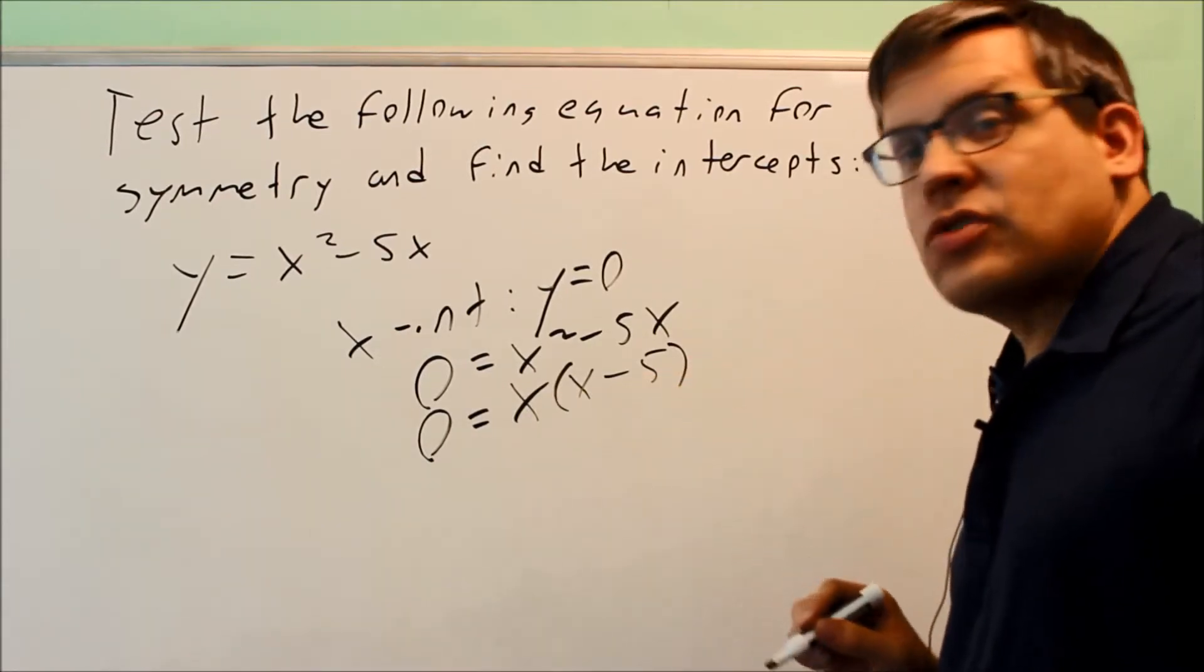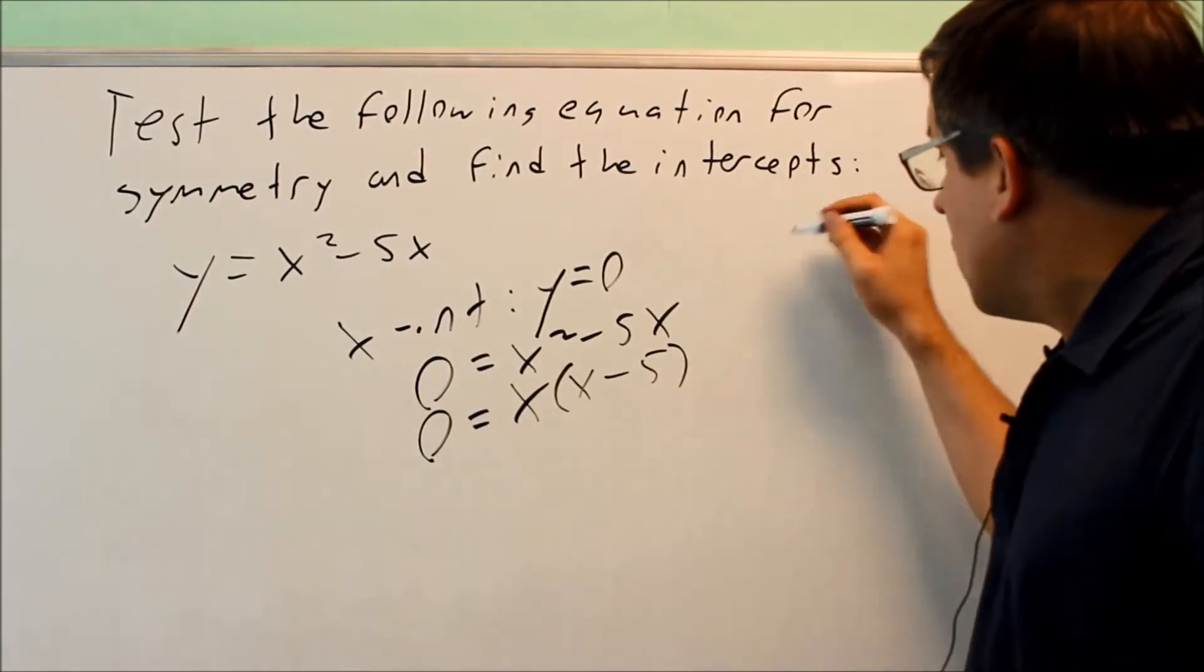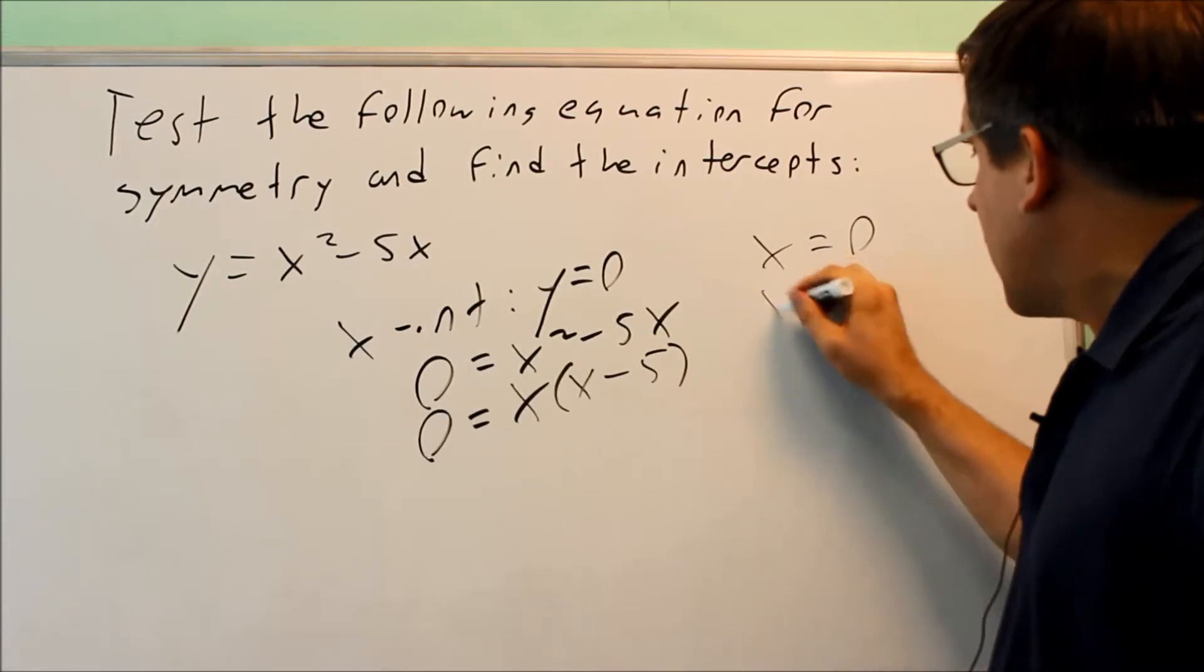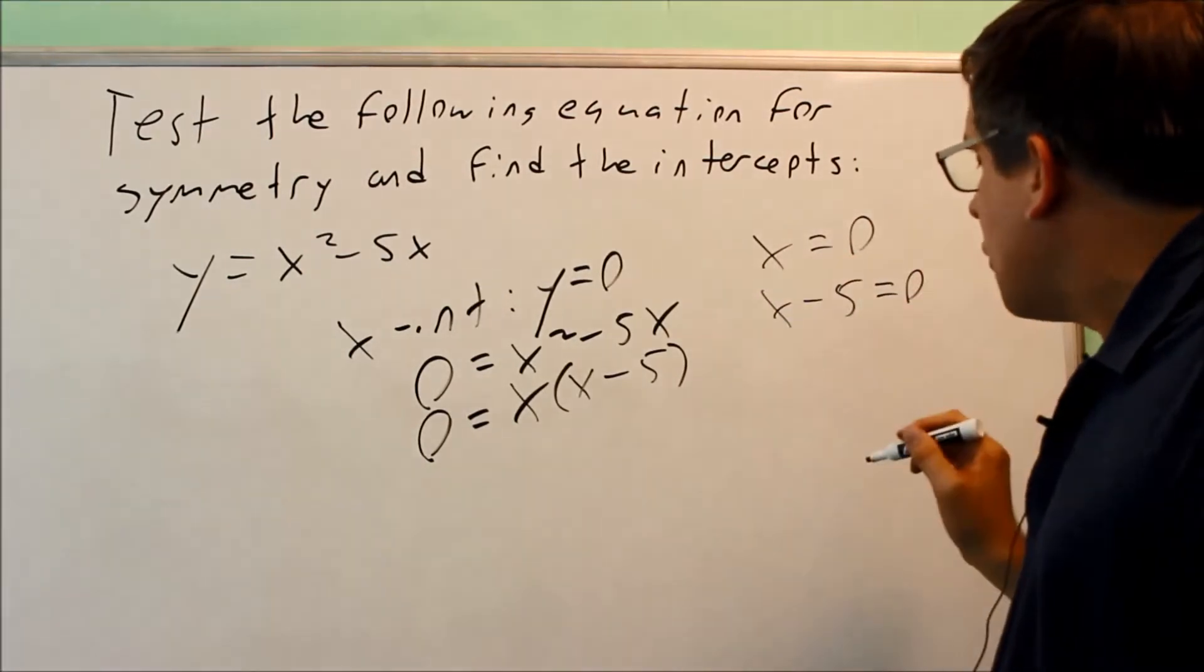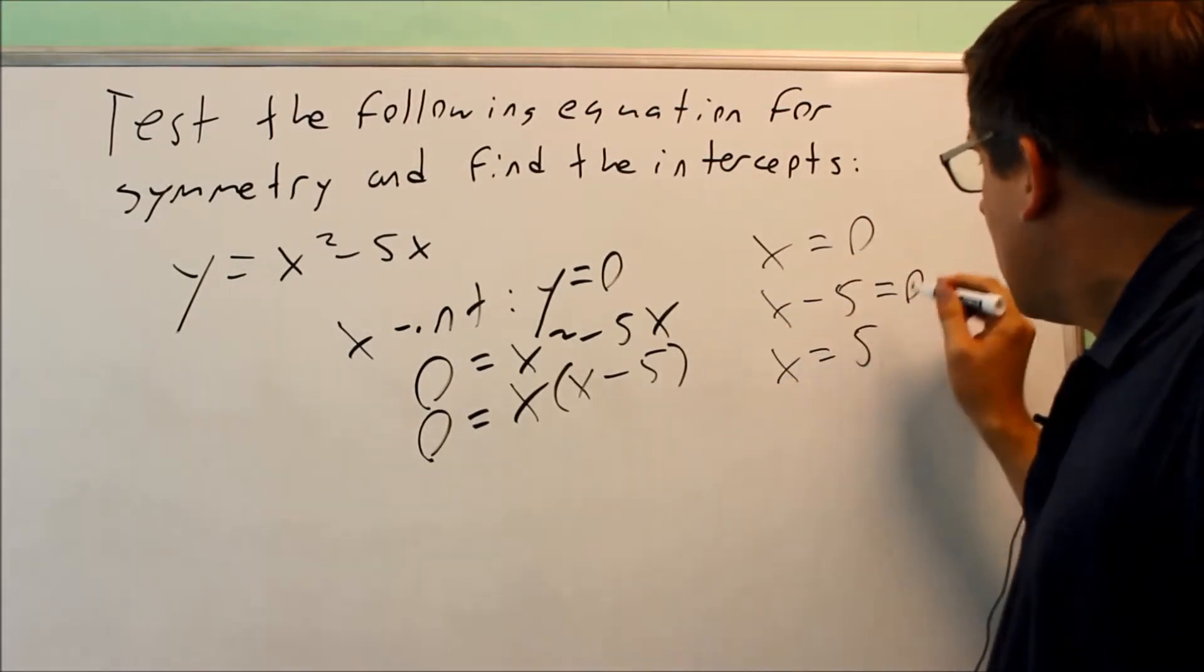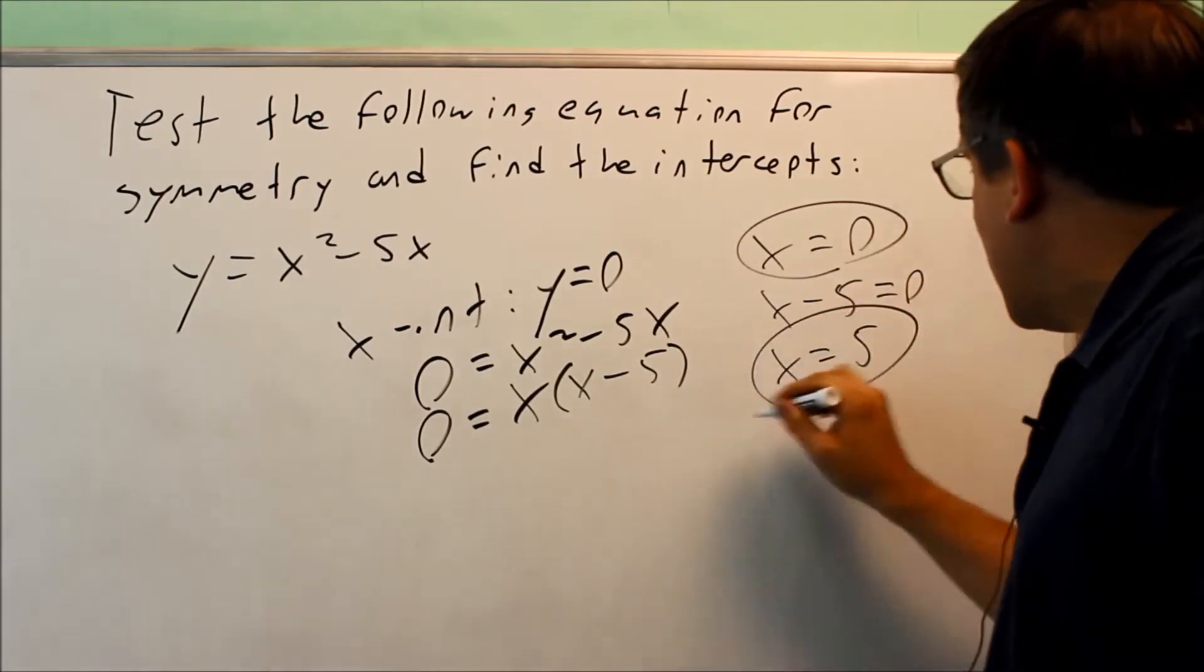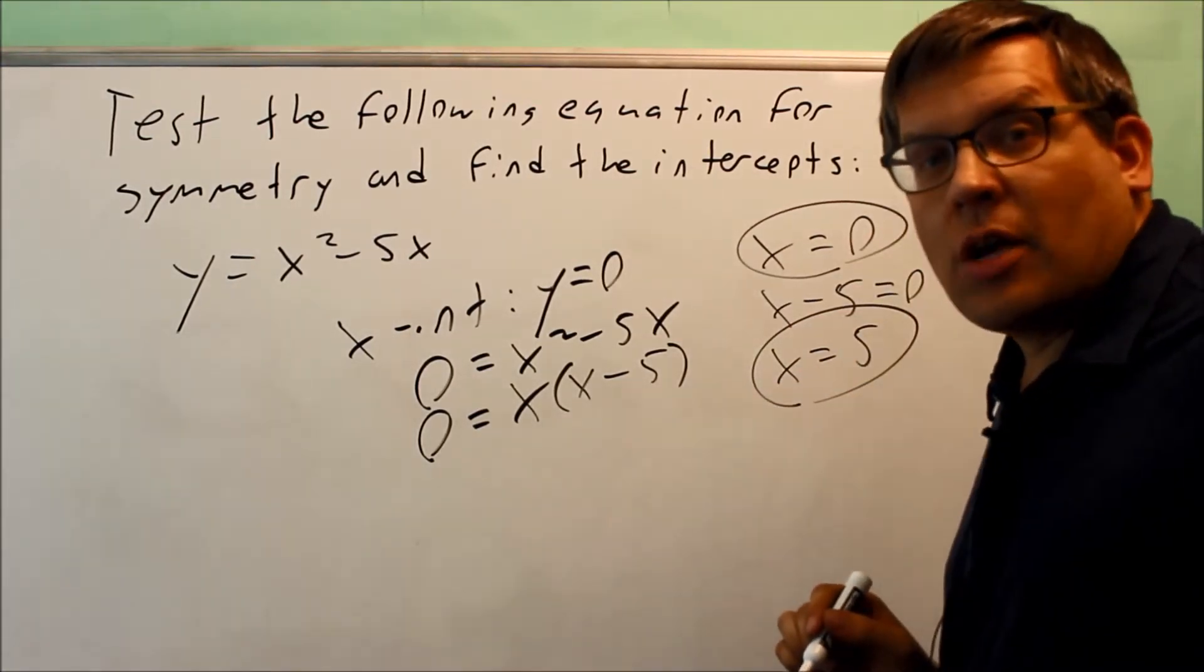Setting each factor equal to zero individually: x = 0 and x - 5 = 0. So x = 0 and x = 5. These are the two x-intercepts.